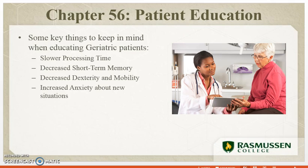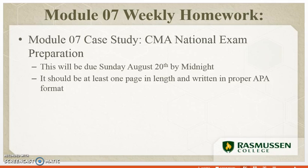That wraps up chapter 41 and chapter 56, pages 1328 to 1329. The remaining item is your homework assignment, due Sunday, August 20th by midnight. You have one case study about CMA National Exam preparation. In your APA-formatted paper, answer the following: Number one — how does good critical thinking apply to your goals of becoming a certified medical assistant?